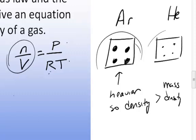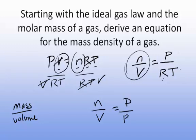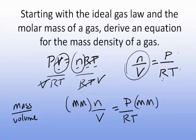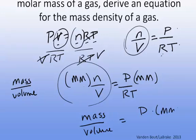Let's look back at our equation for number density and derive an equation for mass density. Mass density is mass per unit volume. To derive that equation, we take our number density equation and multiply both sides by the molar mass of the gas — I'll call it mm. The units for molar mass are grams per mole, and the units here will be moles over liters. So what we end up with is mass per volume for an ideal gas equals pressure times the molar mass of that particular gas...